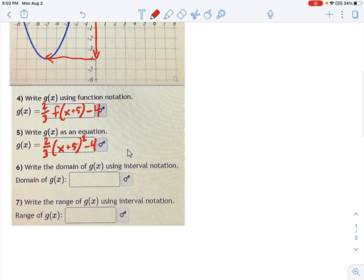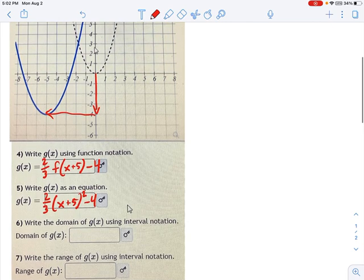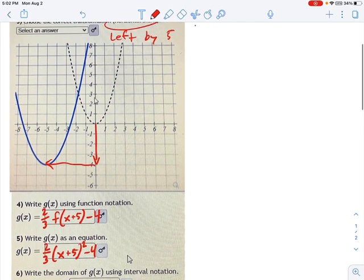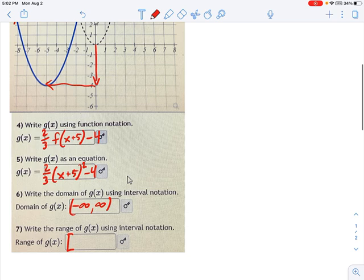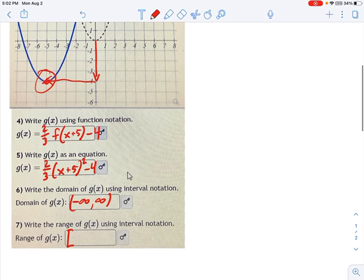All right, write the domain of g using interval notation. Well, this should be pretty easy if you just look at the graph. You can see this thing goes off forever in both directions, right? There's no holes. There's no interruptions. So we just say negative infinity to infinity for domain. And the range starts at the minimum value right here, this point, which is negative 4. And it goes up forever.